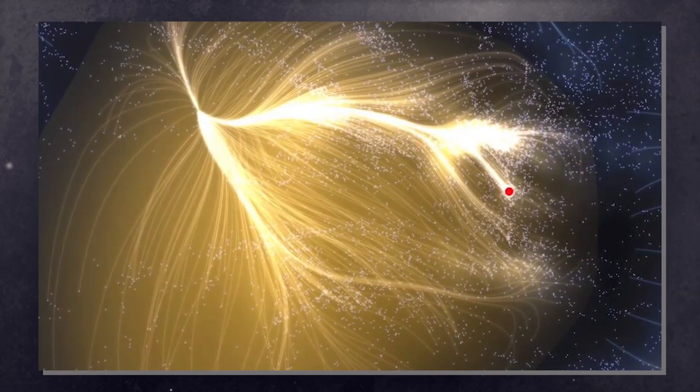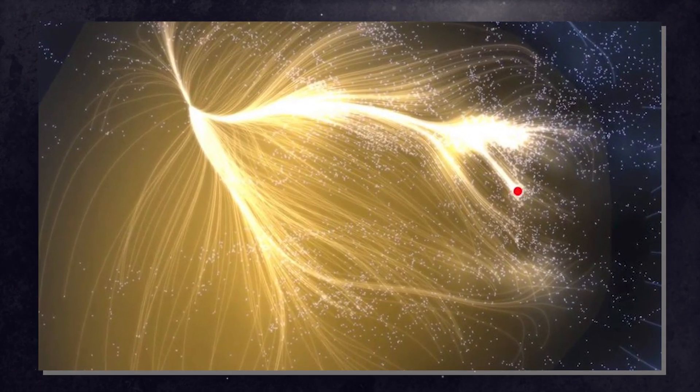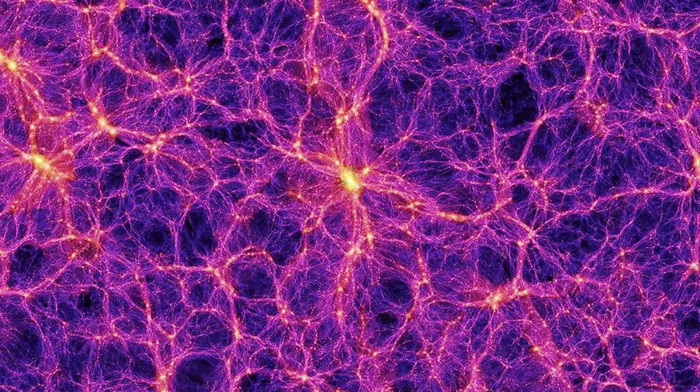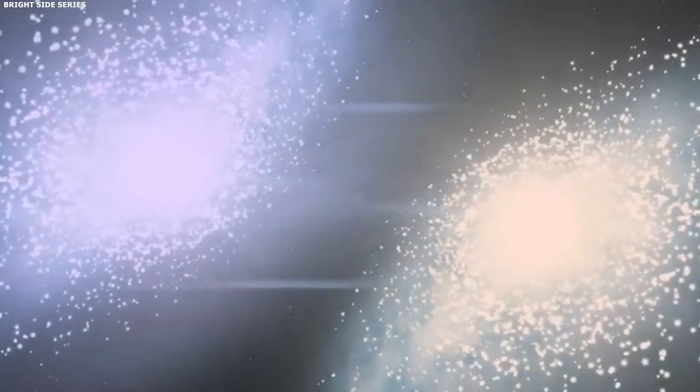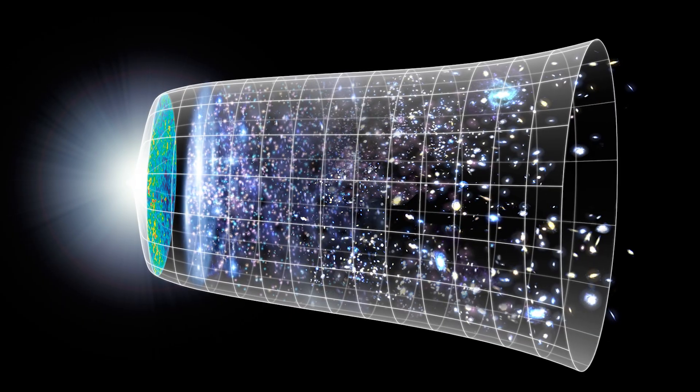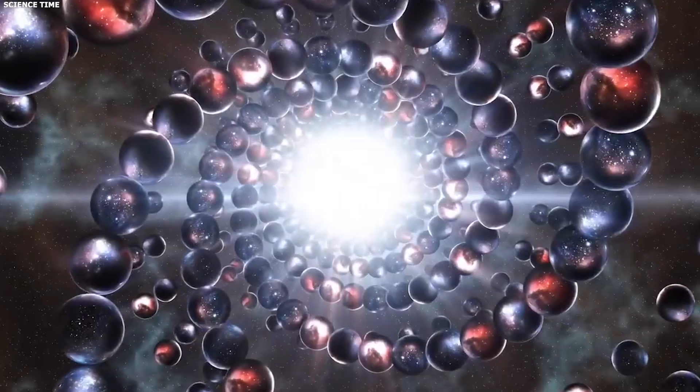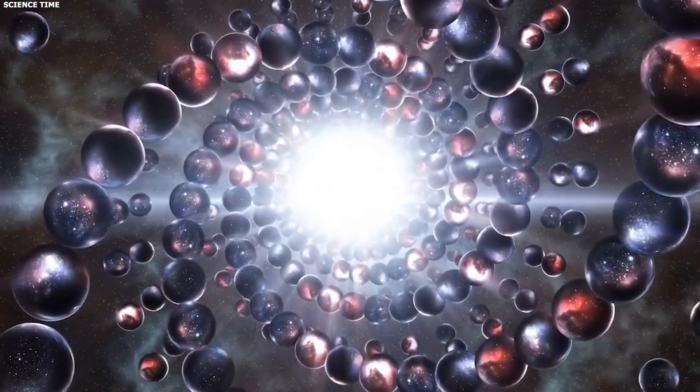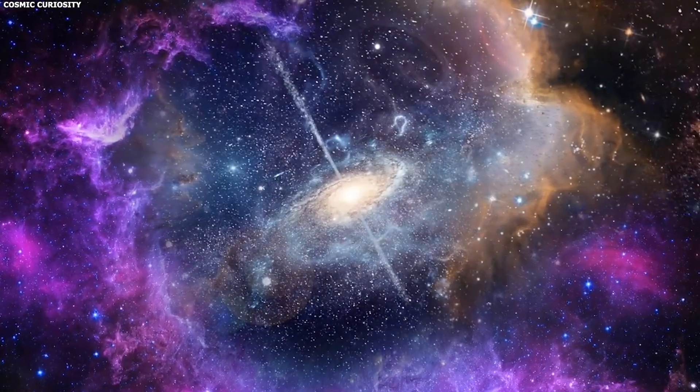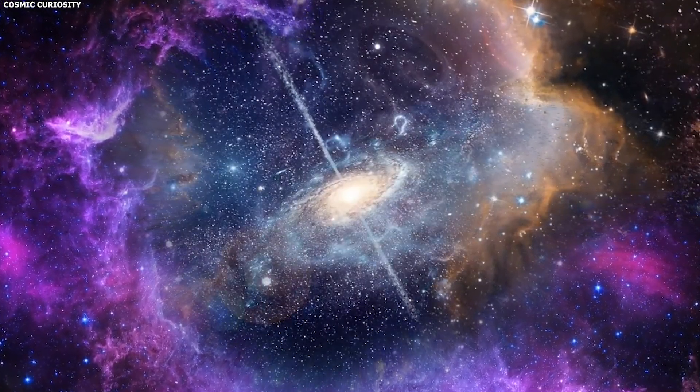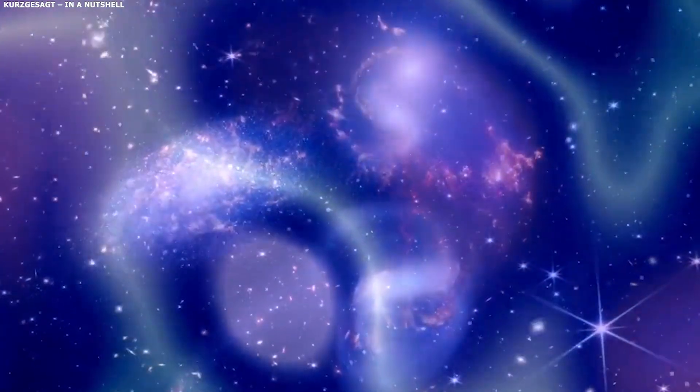One structure called the Hercules Corona Borealis Great Wall stretches about 10 billion light-years across. That's roughly 10% of the entire observable universe. According to Lambda CDM, structures can't get that big. At distances beyond about a billion light-years, everything should blur into a uniform cosmic soup. But it doesn't. The universe is lumpier than physics allows.